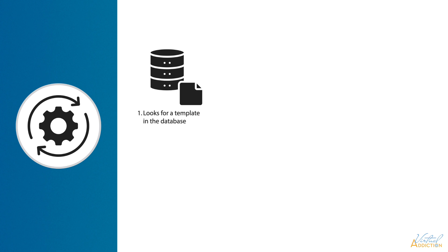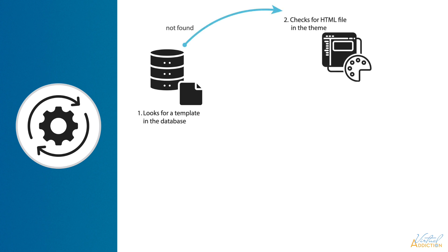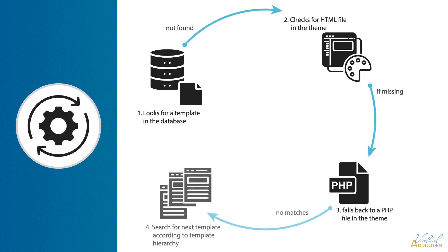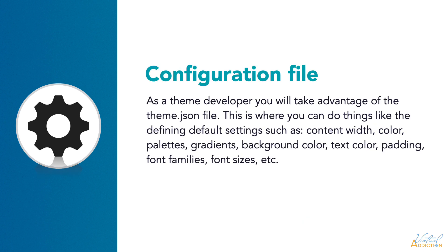When it comes to templates, WordPress follows this order. First, it looks for a template in the database. If it doesn't find one, it checks for an HTML file in the theme. If that is also missing, it falls back to a PHP file in the theme. If there are still no matches, it will search for the next template according to the template hierarchy. If the user has saved changes to a template and the theme is updated, WordPress will not apply the update unless the user resets their customizations. The theme.json file is our new configuration file, and it is another key concept of full site editing. Both classic themes and block themes can take advantage of theme.json.